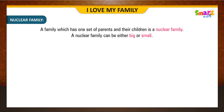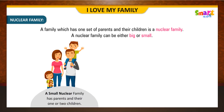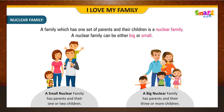Nuclear family: A family which has one set of parents and their children is a nuclear family. A nuclear family can be either big or small. A small nuclear family has parents and their one or two children. A big nuclear family has parents and their three or more children.